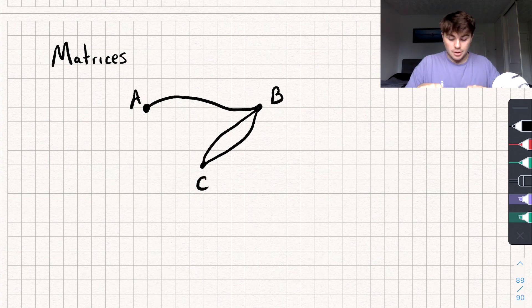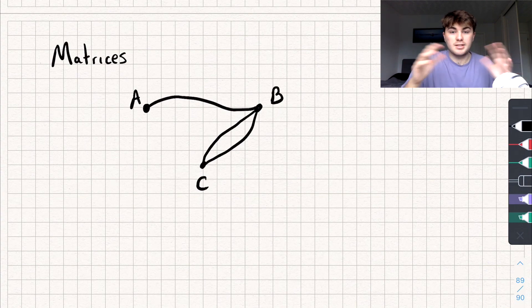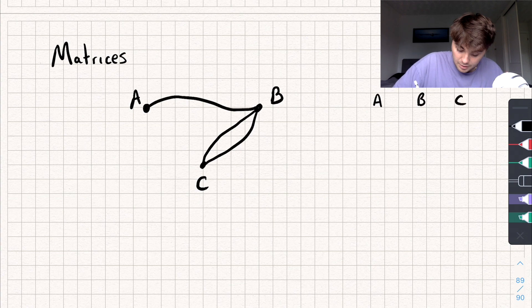Now we could represent the number of routes between each pair of towns in a table rather. So say we've got town A, town B, and town C, and let's do the same over here.